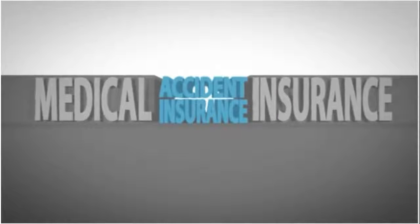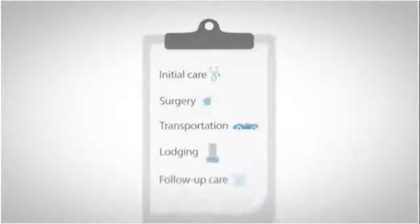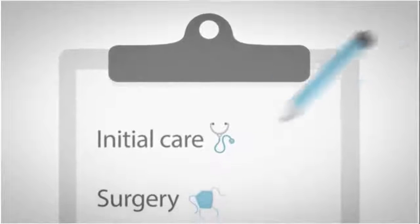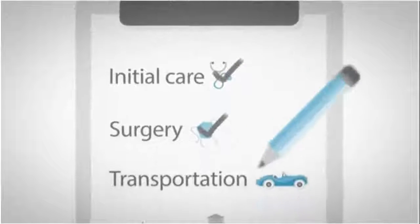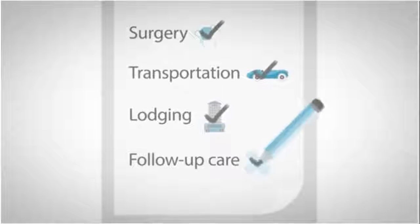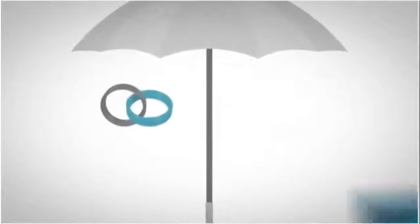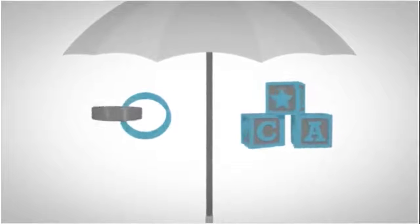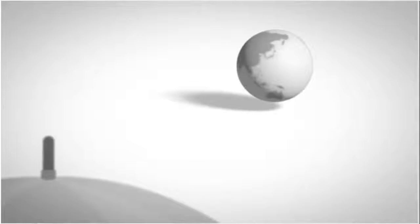Colonial Life's Accident Insurance can help fill the gaps. Our accident insurance can provide you benefits for initial care, surgery, transportation, and lodging. It even provides some benefits for follow-up care. Coverage is also available for your spouse and children, and you have coverage wherever you go, worldwide.